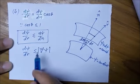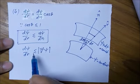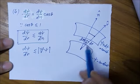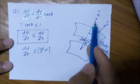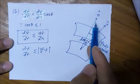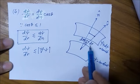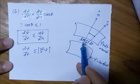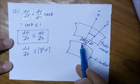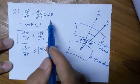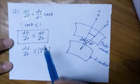The equality sign holds when r cap coincides with n hat, so r is equal to n and theta is 0.